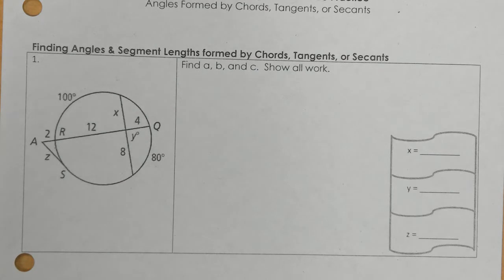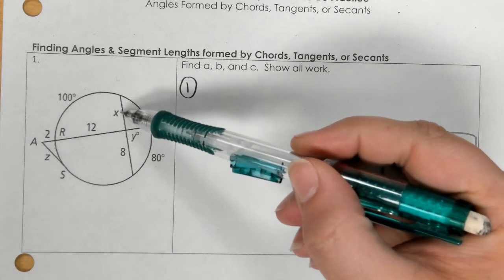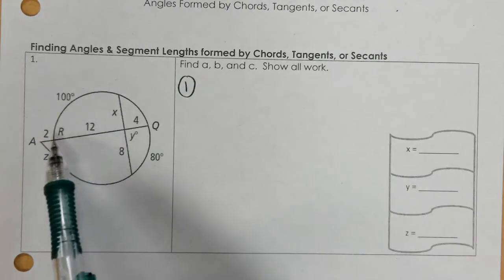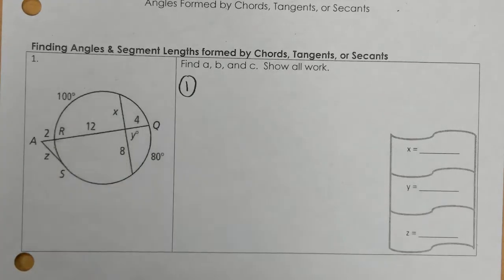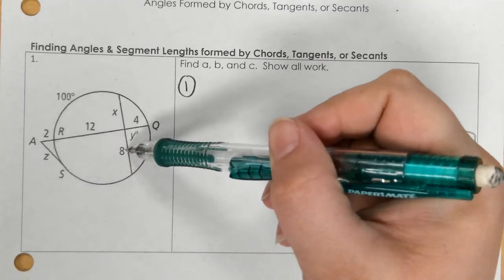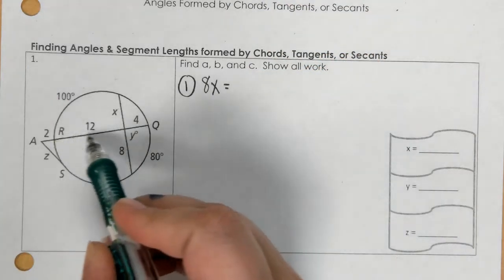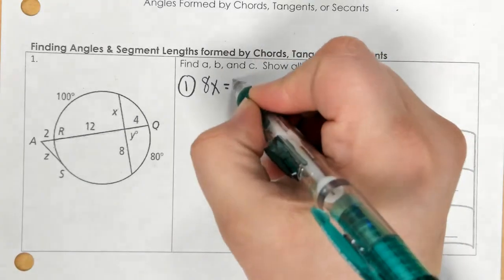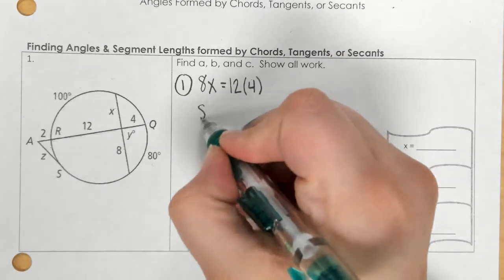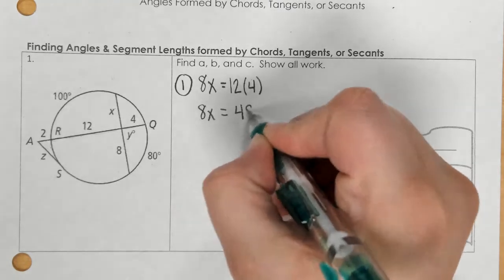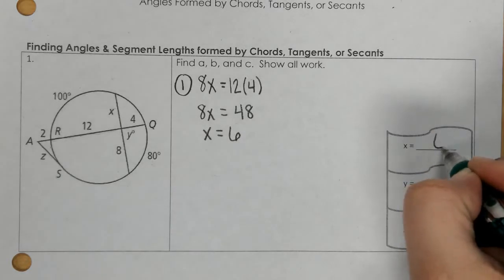So first, let's go with x. I see here that I have x in the 8, and then I have this chord that goes from R, which is 12, to 4. That is where you're going to multiply 8 times x and equal 12 times 4. If I work that out, we get 8x equals 48, divide by 8, x is 6.